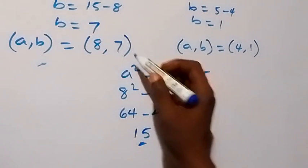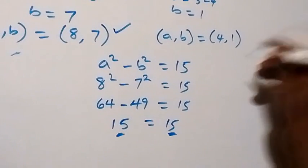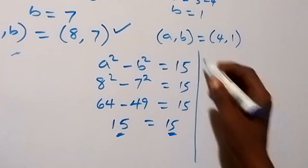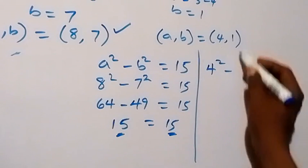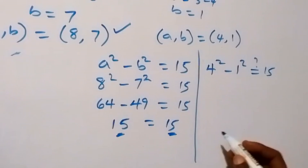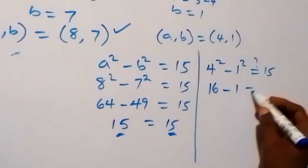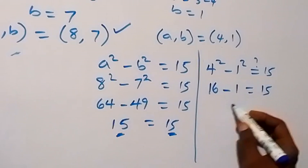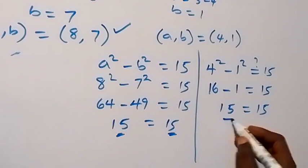From here we can conclude that this satisfies the given problem. In the same way, we can check for the second solution. We have 4 squared minus 1 squared equals 15. That's 16 minus 1 equals 15, which is 15 equals 15. This also satisfies the given problem.